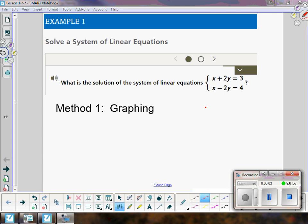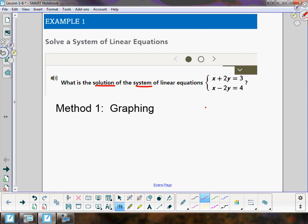Here we are on Example 1, Lesson 1.6. You'll find some space in your white packet between pages 21 and 22 in the additional space for notes. That's where you can write this example. We're going to find the solution to this system of equations: x + 2y = 3 and x - 2y = 4.